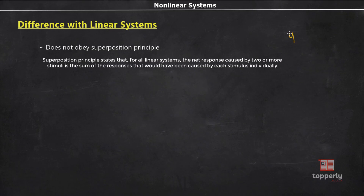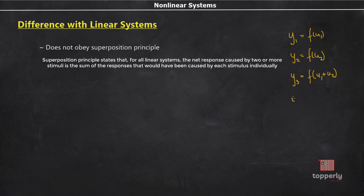Mathematically, if y1 is the response to input u1, and y2 is the response to input u2, and y3 is the response to u1 plus u2, then for the system to obey the superposition principle, y3 should be equal to the sum of y1 and y2. That is the superposition principle.